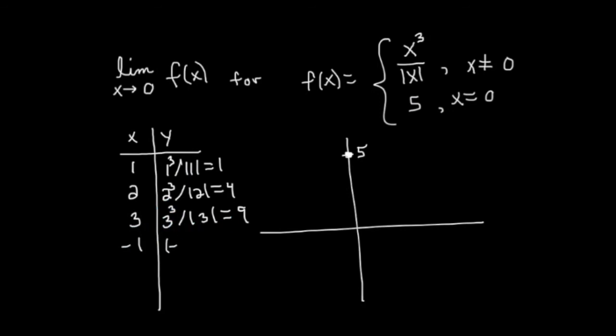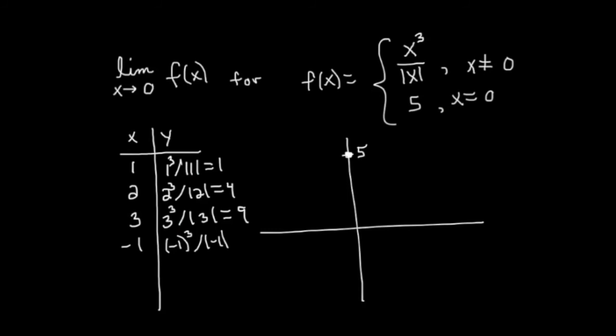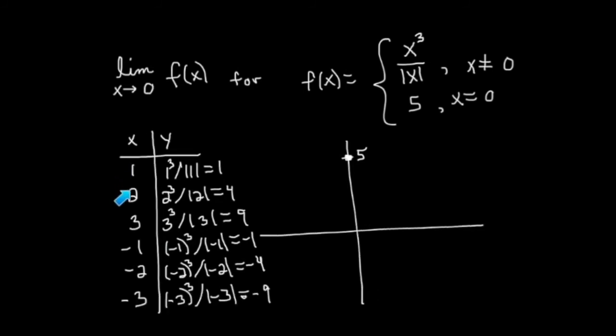But if the x values are negative, something else happens. Plug in some more, I get negative 8 in the numerator divided by positive 2, which is minus 4. If the x values are positive, the function looks just like x squared. And if the x values are negative, the function looks just like negative x squared.